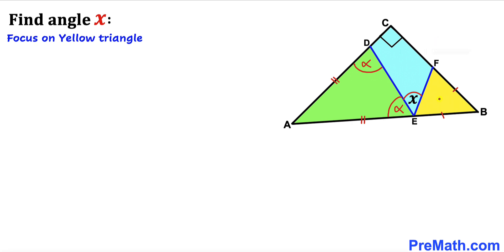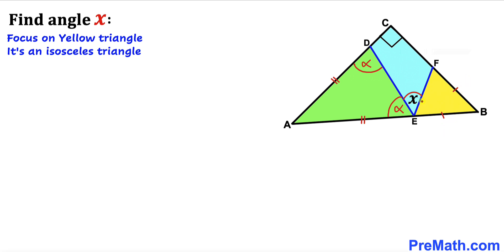Now let's focus on this yellow triangle. We know that this is also an isosceles triangle since this side length equals this side length. Therefore, this angle has got to be equal to this angle. Let me call this angle beta — then this angle has got to be beta as well.